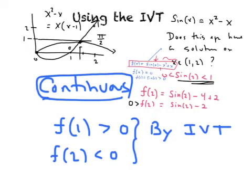There has to be some number c between 1 and 2, where our function f of c is equal to 0. Because you can't have a function that's negative in one place and positive in another without it crossing the origin.